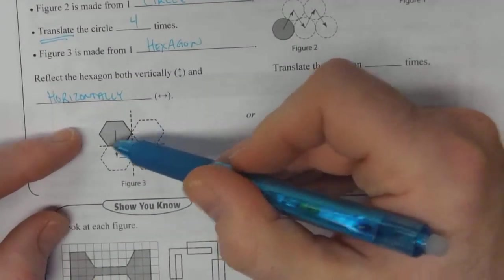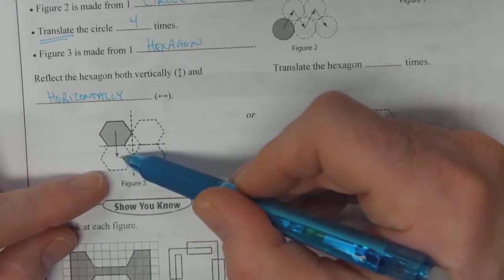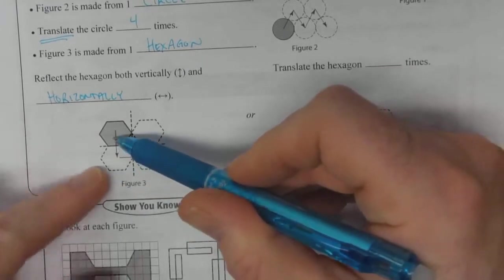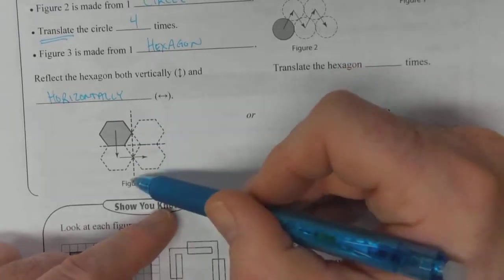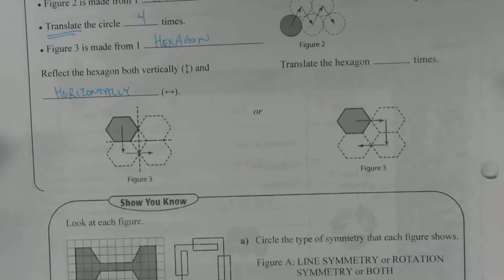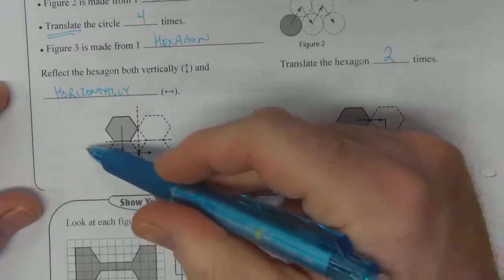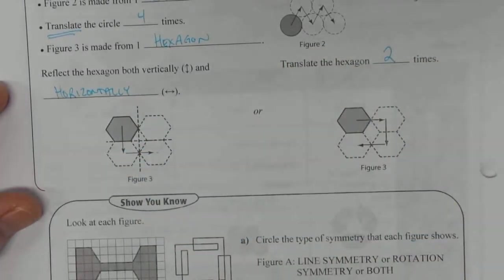If you reflect it across this horizontal line, you will fill this spot here. And then you reflect the whole thing across this vertical line of symmetry, and you'll get both of these filled in as well. So you've got two different reflections going on: one on your horizontal line and then one on your vertical line.